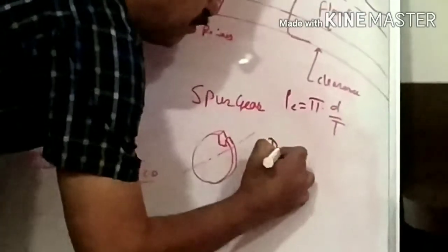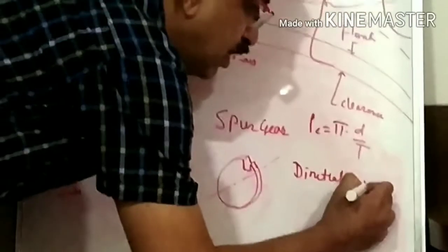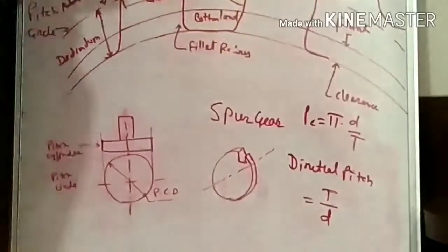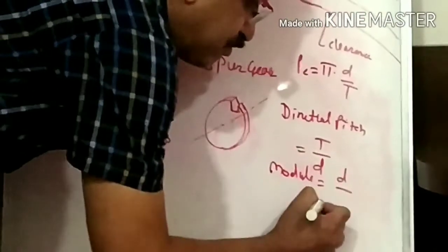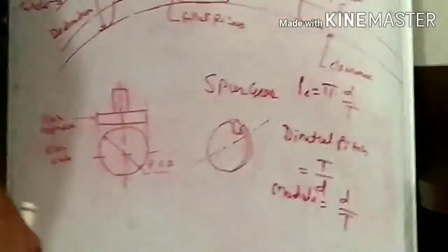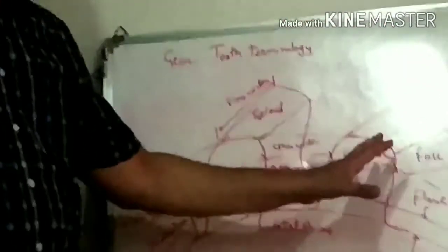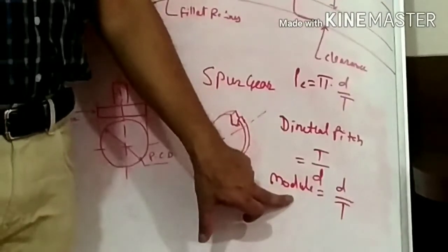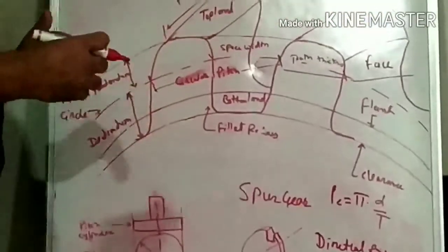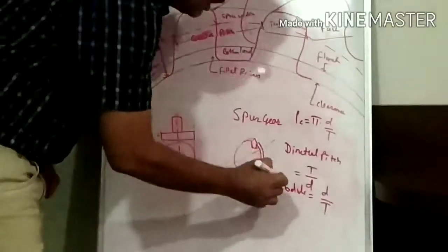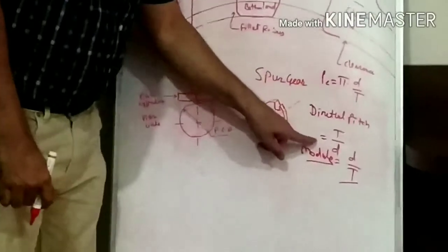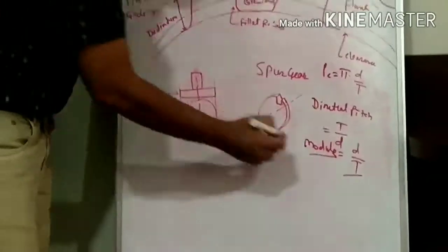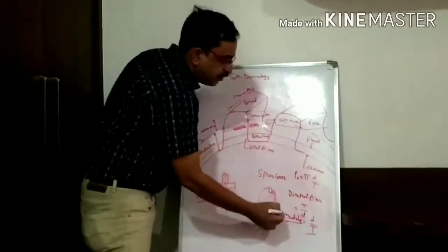The next term is diametral pitch. Diametral pitch is the ratio of the number of teeth on the gear to the pitch circle diameter of the gear. Then, a very important term is the module. Mathematically, module is the ratio of the pitch circle diameter of the gear to the number of teeth. With the help of module, we can specify the size of the gear; all parameters of the gear depend upon the value of module. Module shows how big or small the gear is, and while procurement of a gear, module along with the number of teeth determines the pitch circle diameter.